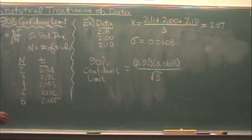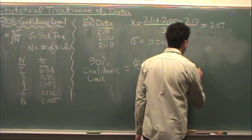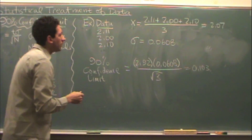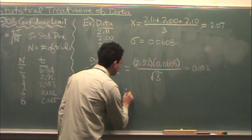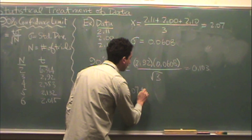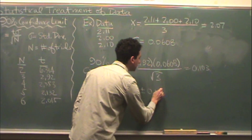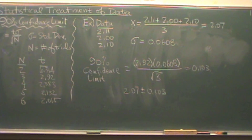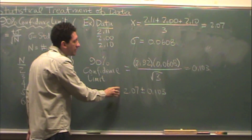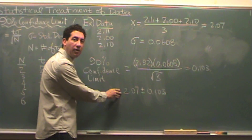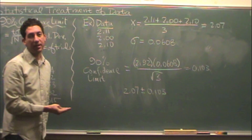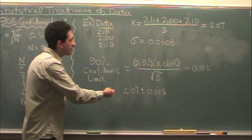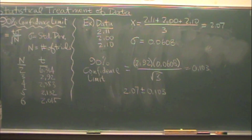In this example, I calculated 0.103. What does that mean? I can write it like this: 2.07, my average, plus or minus 0.103. And say that I'm 90% confident that all my data points are within this range. The smaller this number would just mean that I have a tighter range of data.